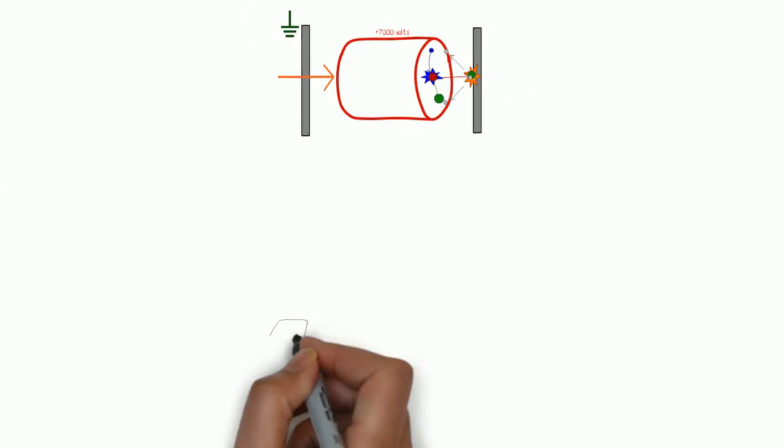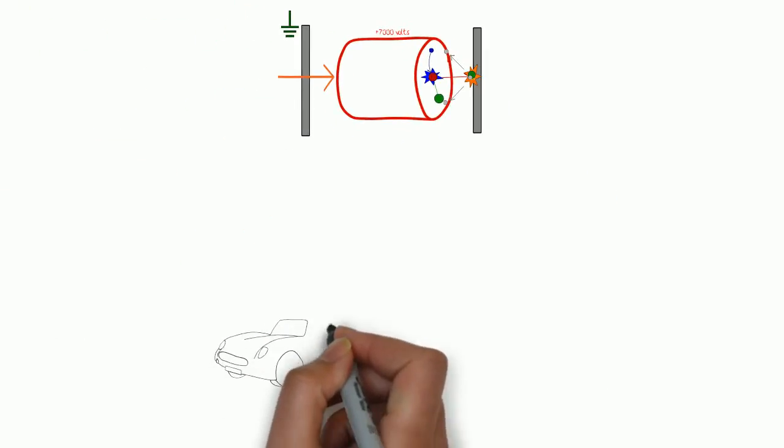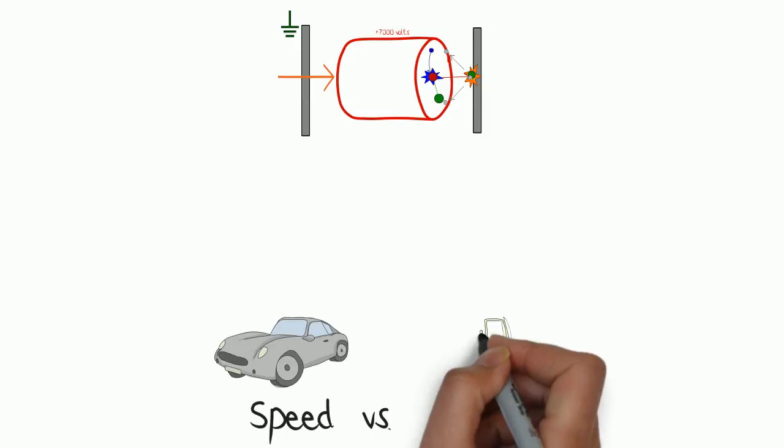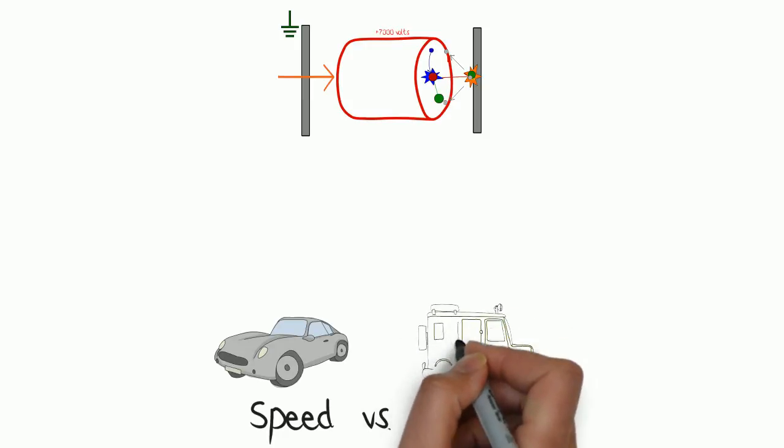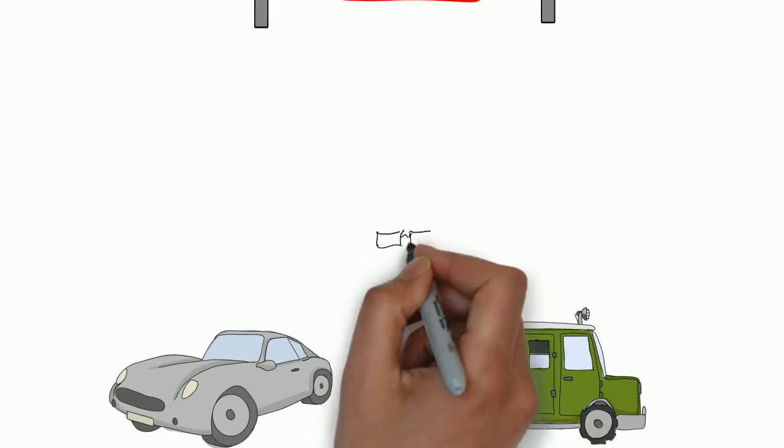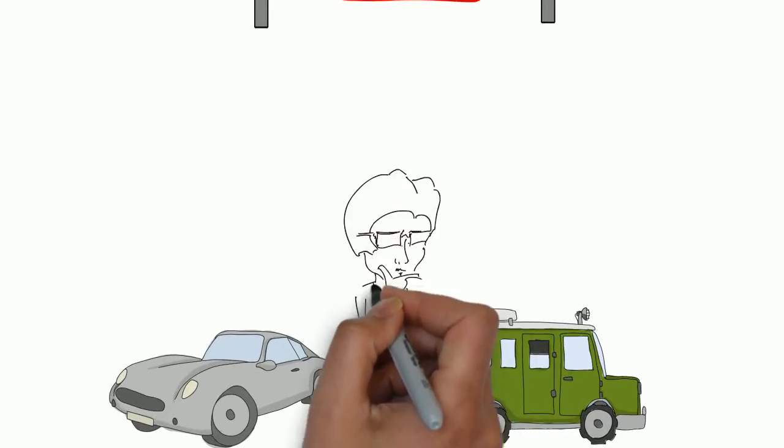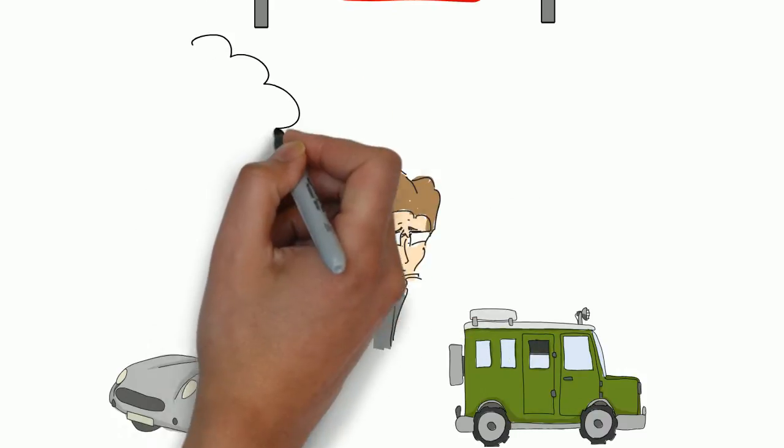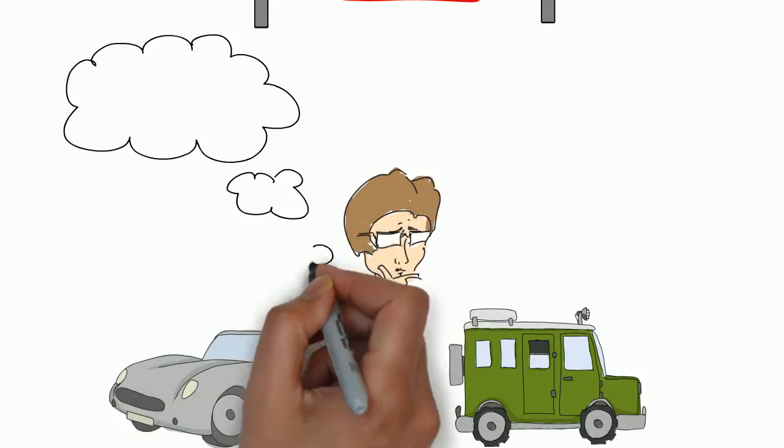Now, when we choose an ion pump element, we have to make a decision on speed, represented here by our race car, or we're going to look at long-term stability, and by that we mean noble gas stability, represented by our SUV. As vacuum scientists and engineers, we have to make the decision which of those two is more important, given the space that we have and the system requirements.